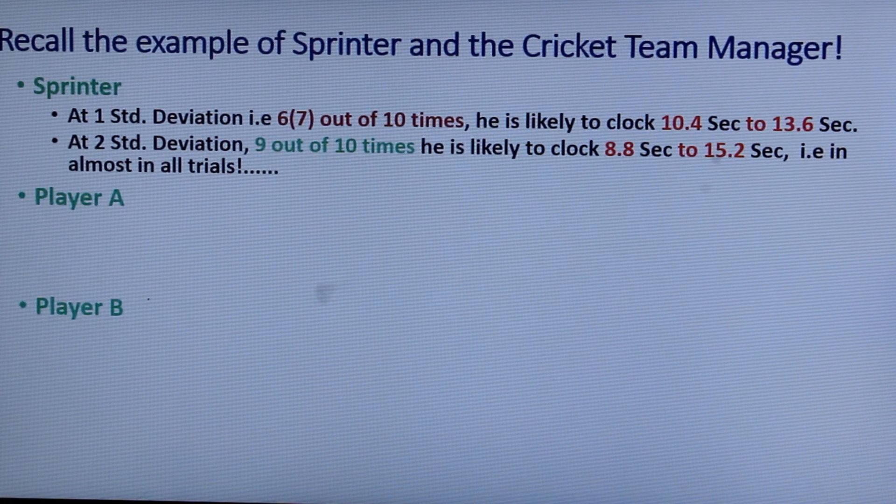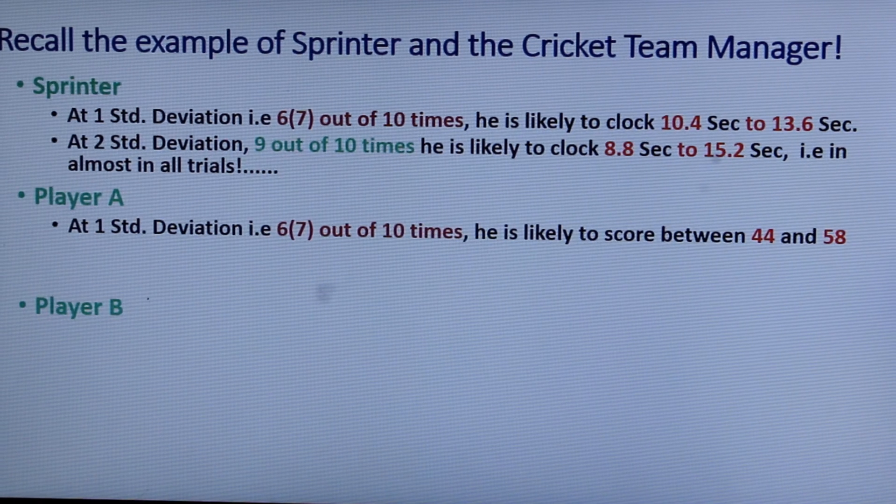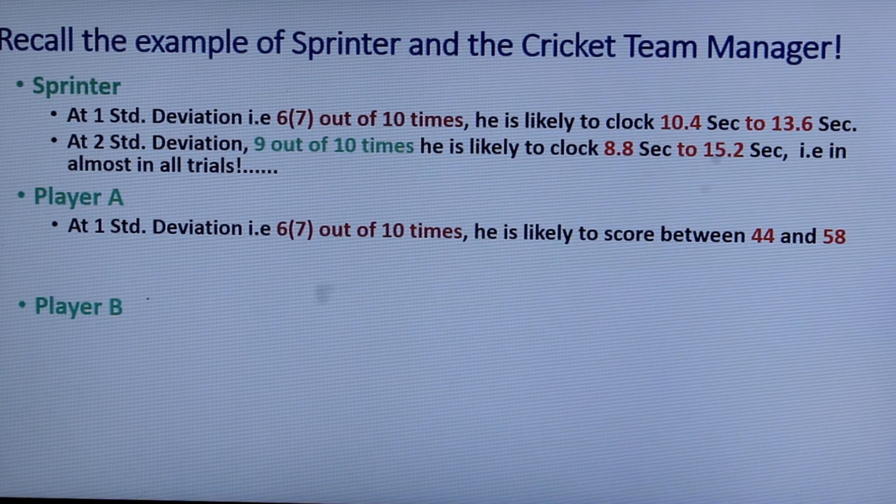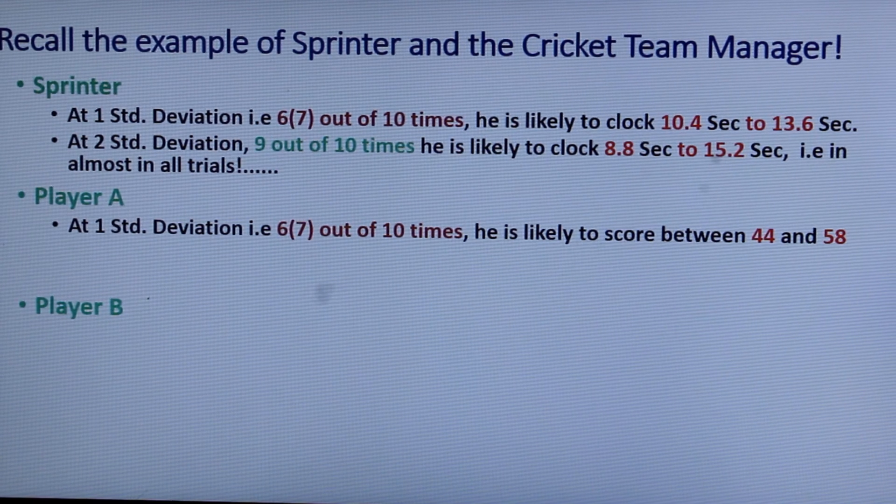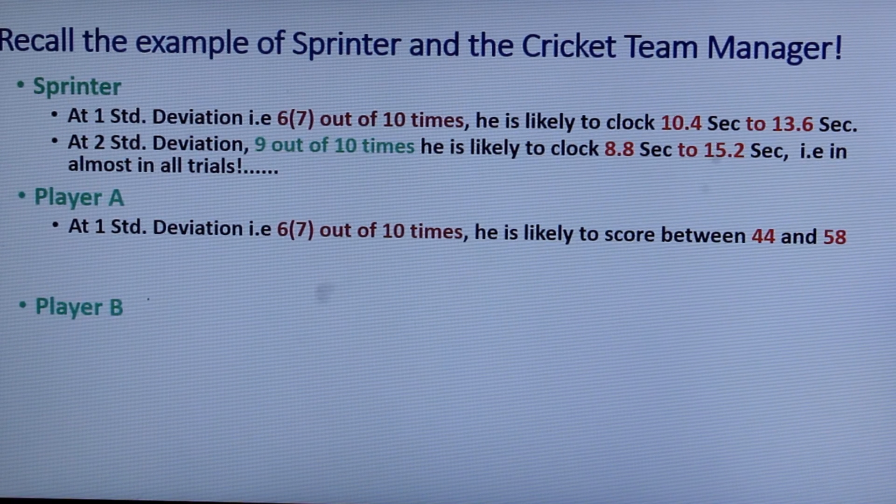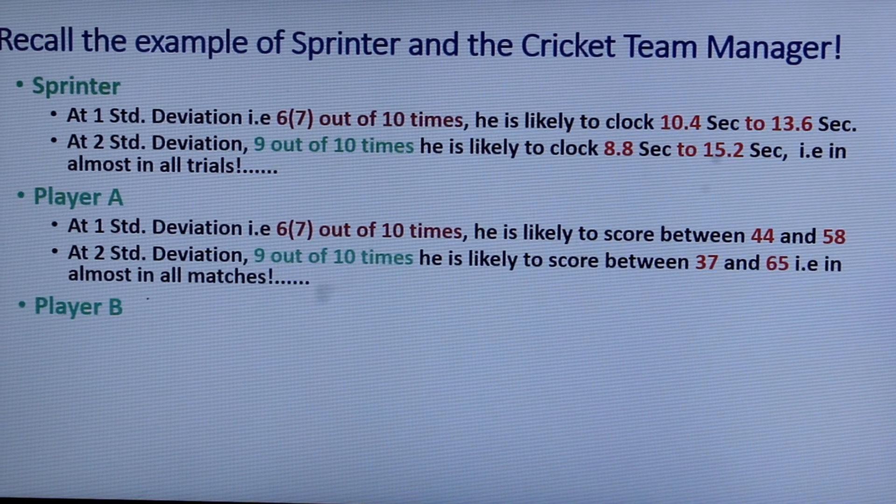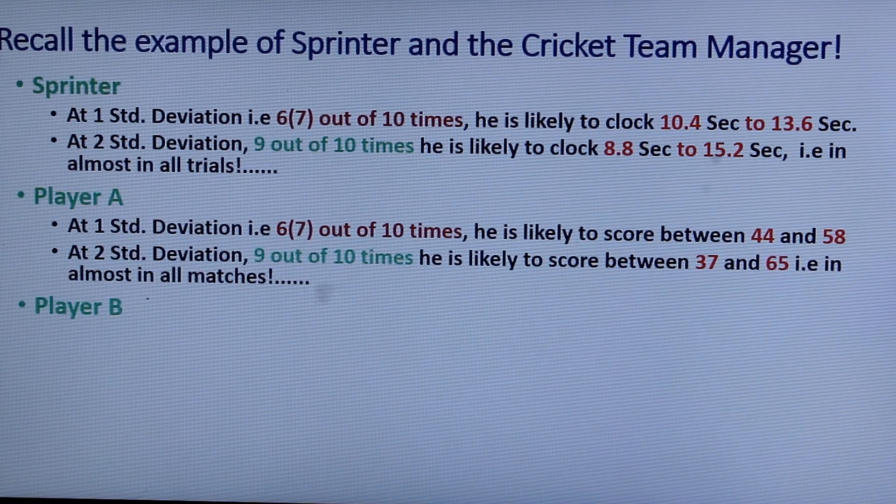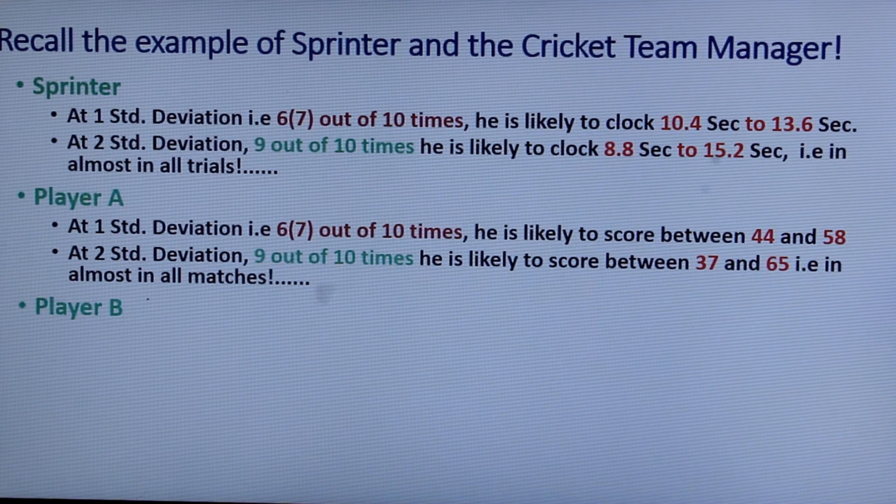Now let us take the example of player A. Player A was chosen because his score was consistent. So out of 10 innings seven innings he is likely to score anywhere between 44 runs to 58 runs. And with two standard deviation which means that 9 out of 10 innings he will score between 37 runs to 65 runs. That is definitely a very consistent score.